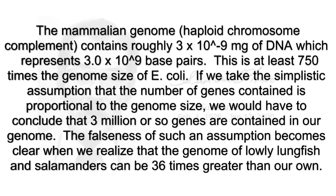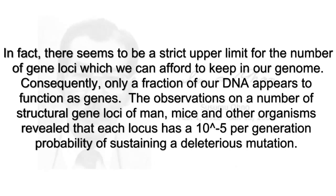The mammalian genome haploid chromosome complement contains roughly 3 times 10 to the minus ninth milligrams of DNA, which represents 3 times 10 to the ninth base pairs. This is at least 750 times the genome size of E. coli. If we take the simplistic assumption that the number of genes contained is proportional to the genome size, we would have to conclude that 3 million or so genes are contained in our genome. The falseness of such an assumption becomes clear when we realize that the genome of lowly lungfish and salamanders can be 36 times greater than our own. In fact, there seems to be a strict upper limit for the number of gene loci which we can afford to keep in our genome.